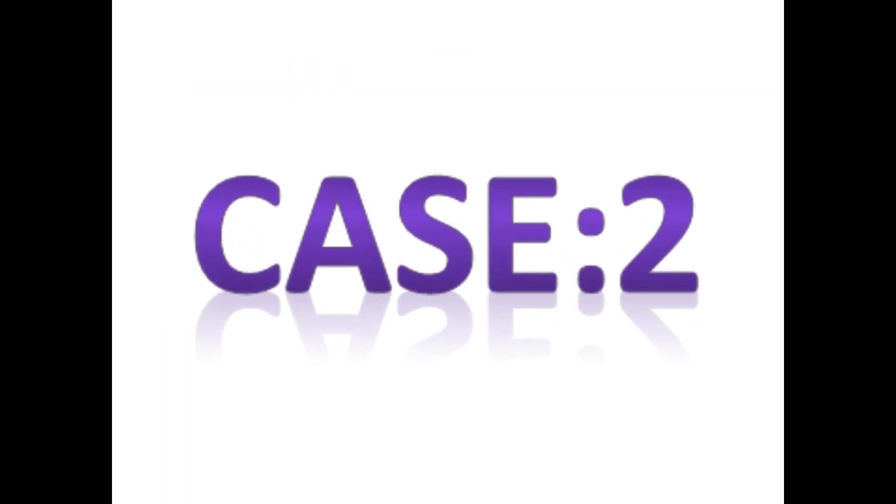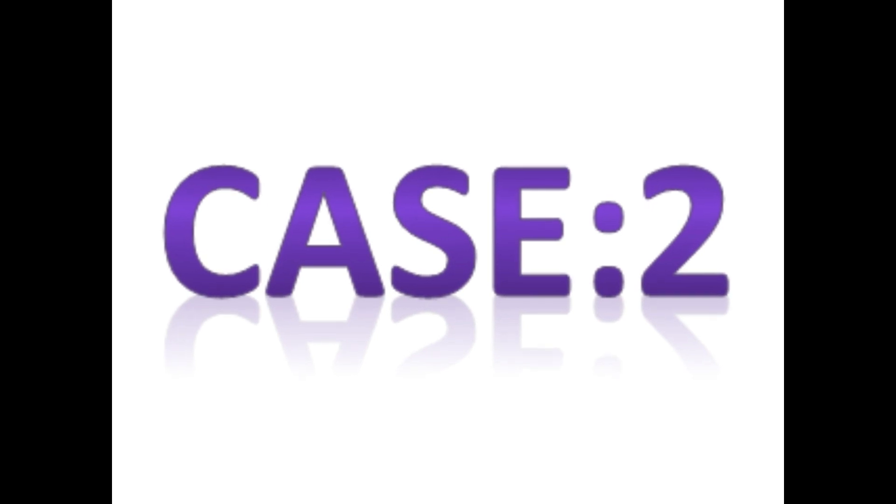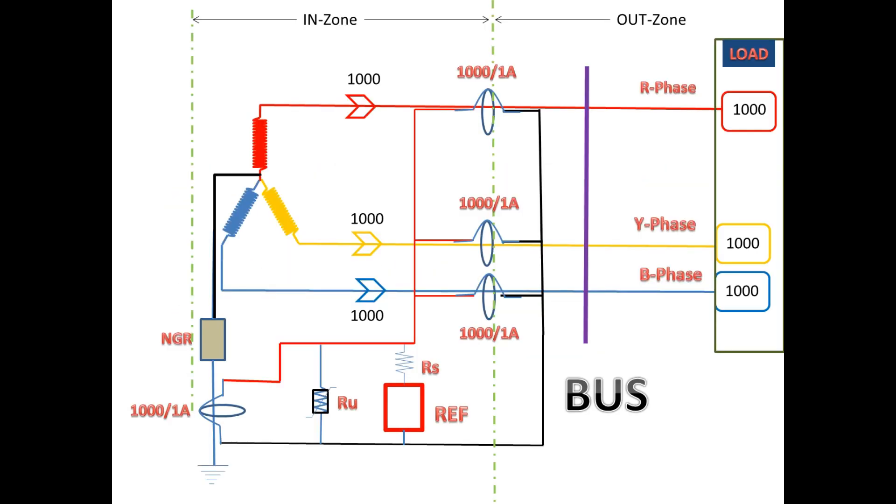Now for Case 2: Let's consider the transformer on full load. During this time, the R phase winding gets a minor earth fault but still supplies load current. This fault current will take a neutral path—let's consider 500 amps due to this fault.